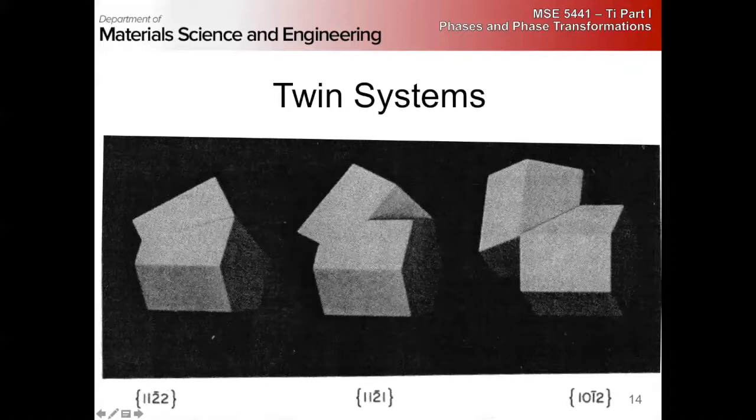These are often referred to as tensile twins. They're going to occur when you're pulling on the c axis. So you'll sometimes see that in the literature. Remember, twinning is directional. So if you were to load the c axis in compression, you wouldn't get these twins. You would get one of the other types of twins.